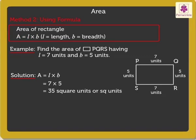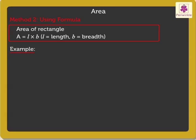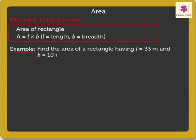Now let's solve one more example. Find the area of a rectangle having length thirty-three meters and breadth ten meters. Area equals length into breadth, which is equal to thirty-three into ten, which is equal to three hundred thirty square meters.